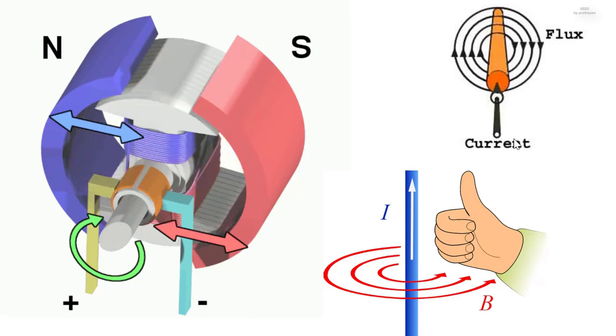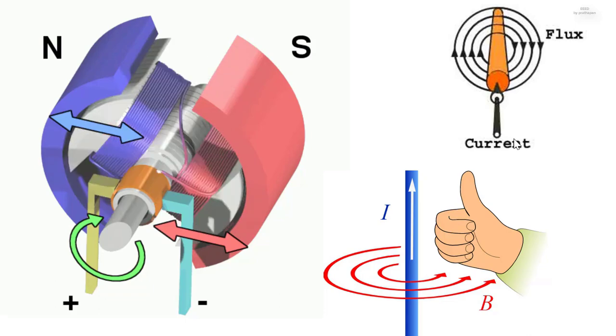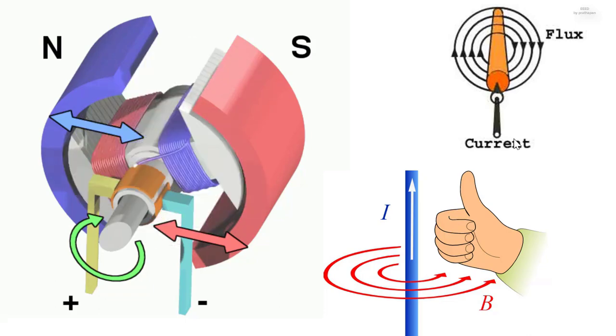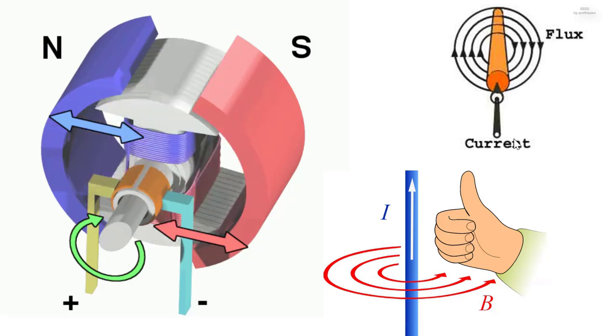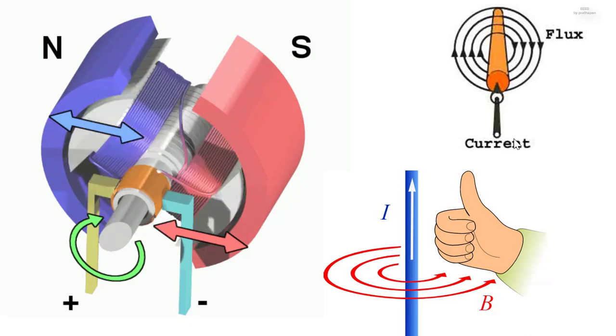The direction of the induced magnetic field is sometimes remembered by Maxwell's corkscrew rule. That is, if the conventional current is flowing away from the viewer, the magnetic field runs clockwise round the conductor, in the same direction that a corkscrew would have to turn in order to move away from the viewer.